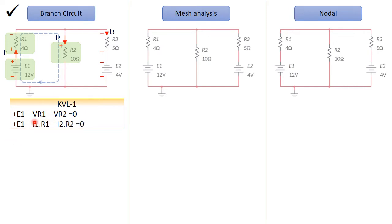Then we will write VR1 here, it's I1·R1, and VR2 is I2·R2. Then we have the first equation here.